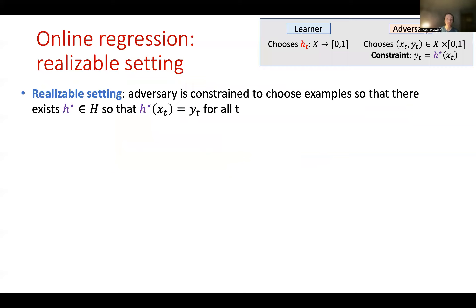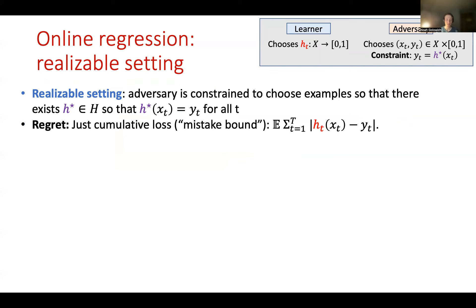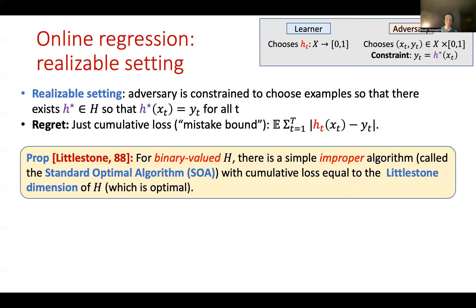One important special case of online regression is the realizable setting, which is also useful for analyzing the general case. Here the adversary is constrained to choose examples (X_t, Y_t) consistent with the hypothesis class H, meaning there exists some H* in H which correctly labels all examples chosen by the adversary. In the realizable setting, the regret simply becomes the cumulative loss or mistake bound, which is the expected value of the learner's loss over all T time steps.